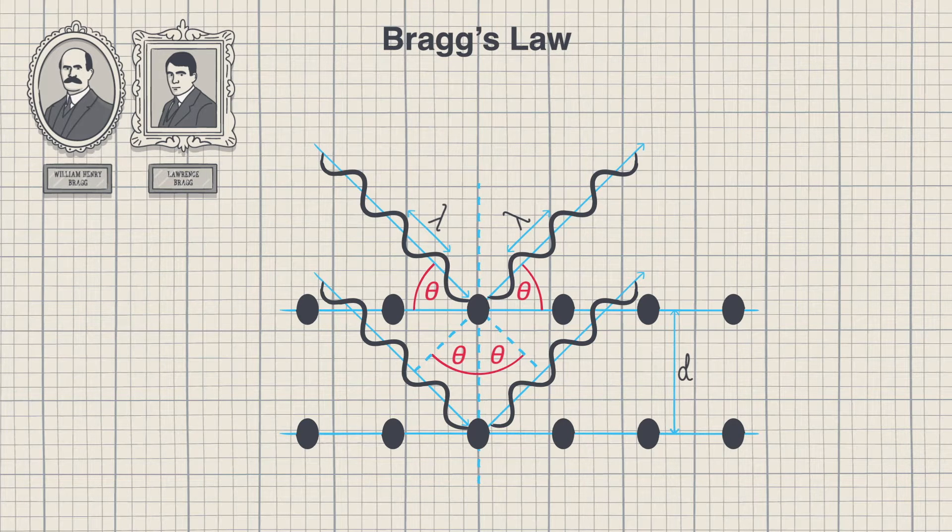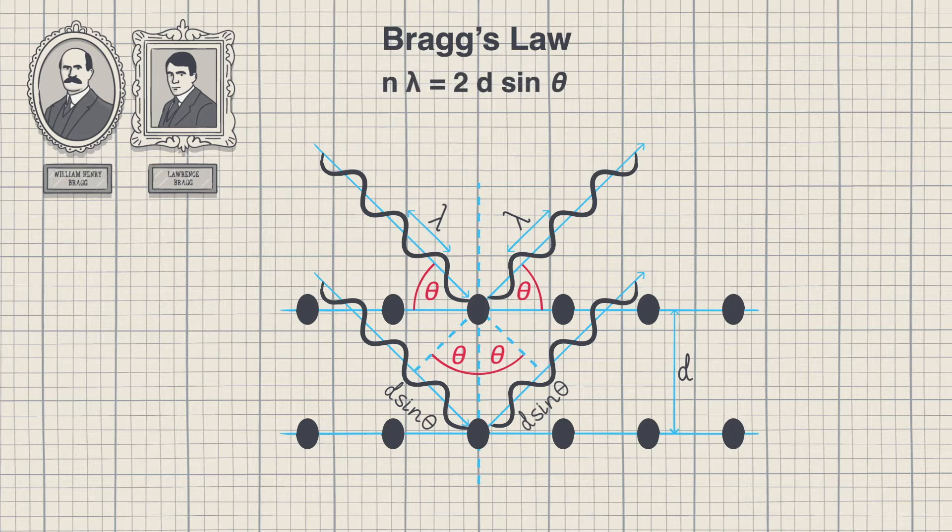Here using a little bit of Pythagoras we show how the x-rays must travel 2d sine theta longer for the bottom plane than the first for both to be in a diffracting position. This gives our famous law n lambda equals 2d sine theta where n must be an integer number, lambda the wavelength, and d are interplane spacing and theta is the diffracting angle.